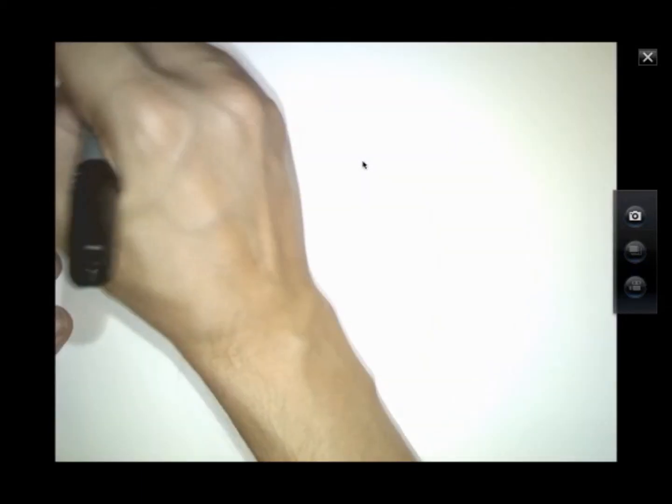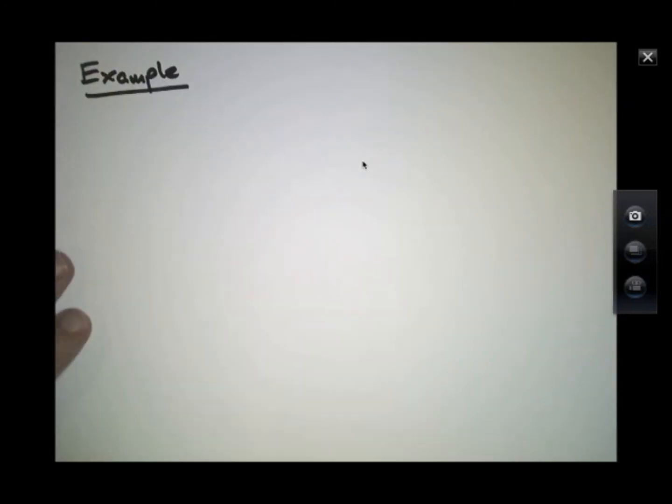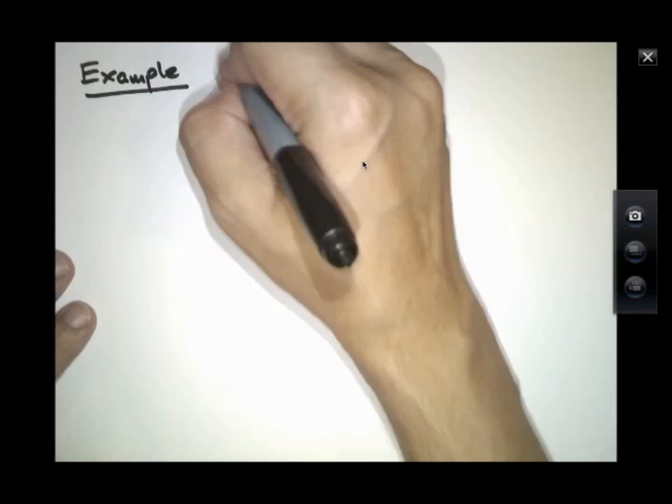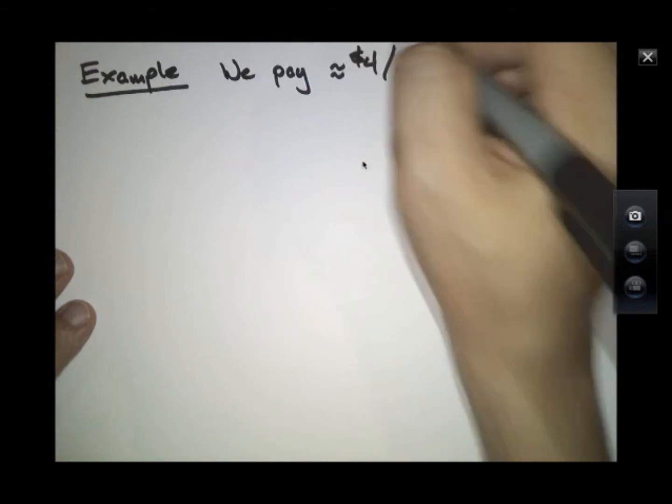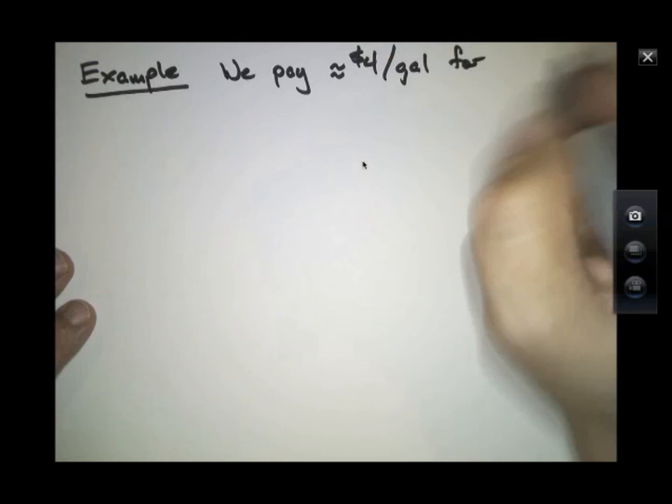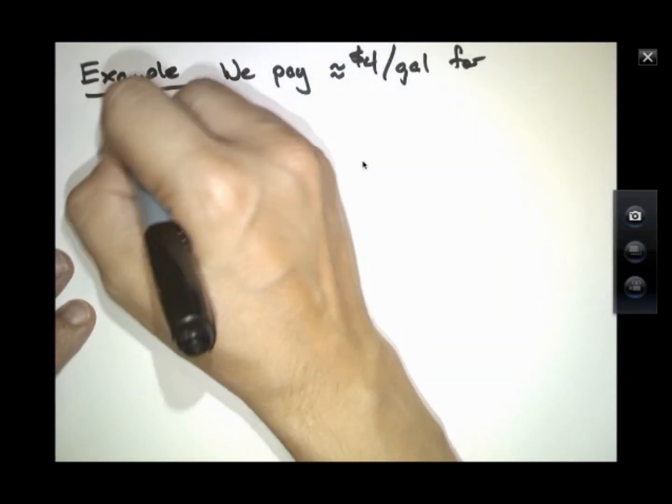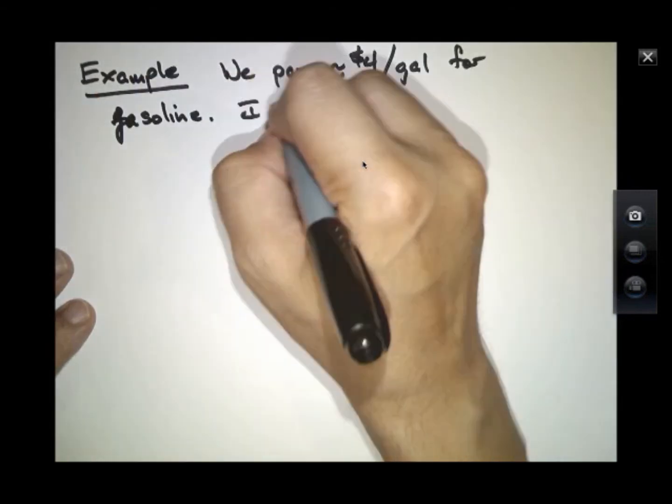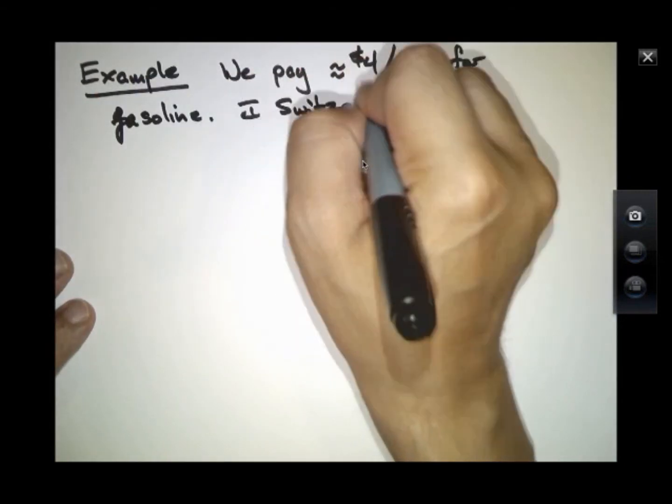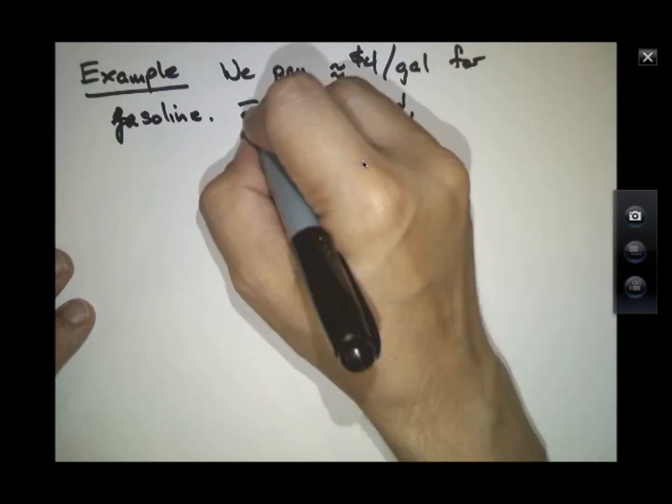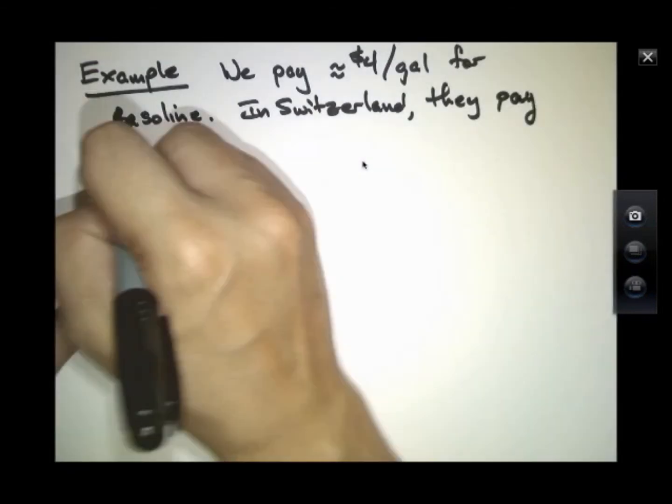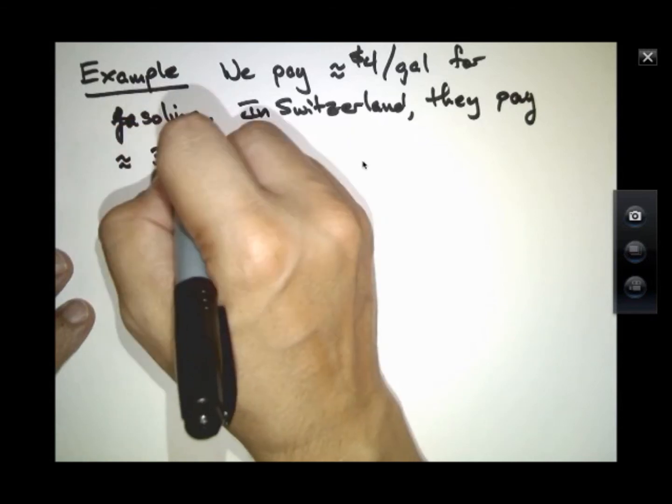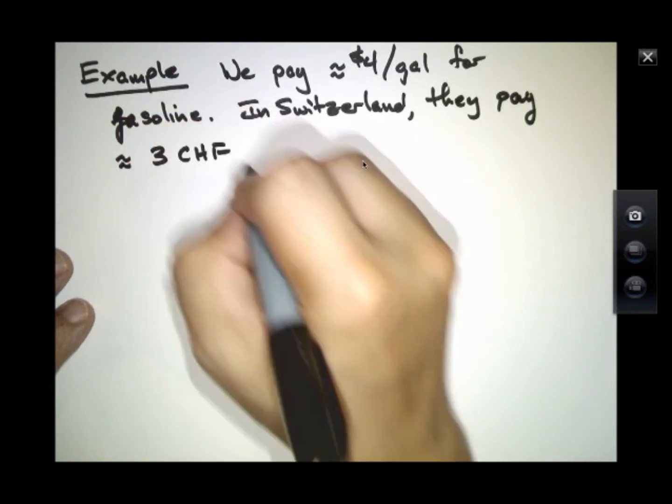Another example we could do: we pay approximately $4 per gallon today for gasoline. In Switzerland, they pay approximately three Swiss francs per liter.